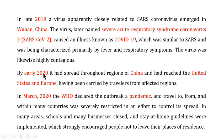By early 2020 it had spread throughout China and reached the United States and Europe, primarily through travelers from affected regions. In March 2020, the World Health Organization declared COVID-19 a pandemic, and travel to and from many countries was severely restricted in an effort to control its spread. In many areas, schools and businesses were closed and people were guided to stay at home.